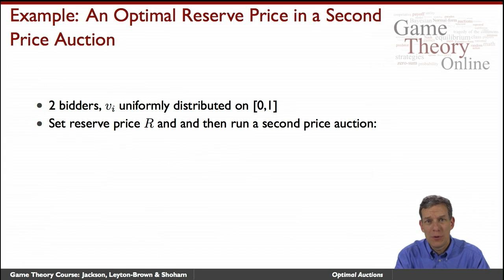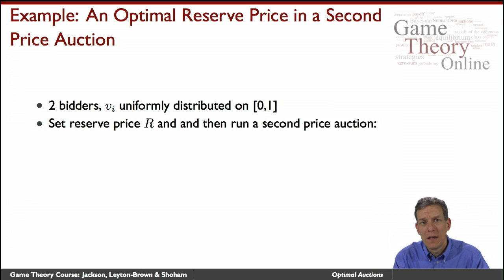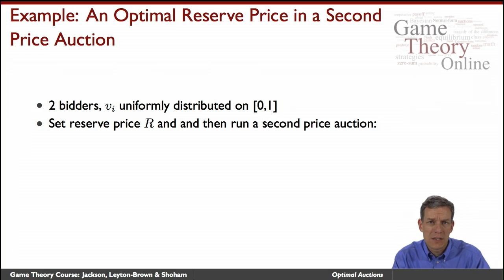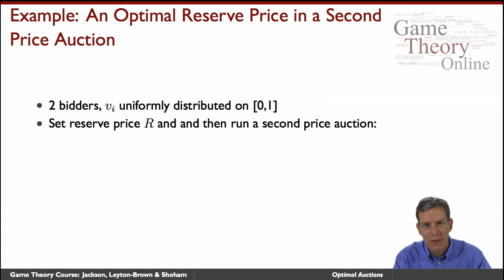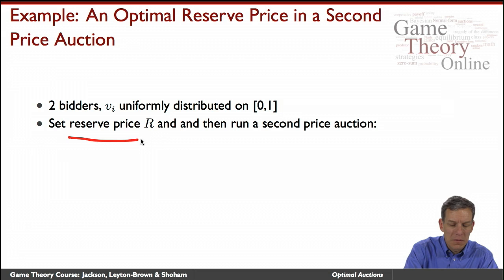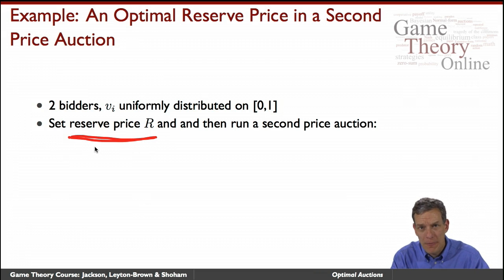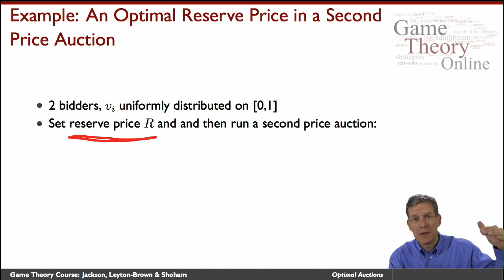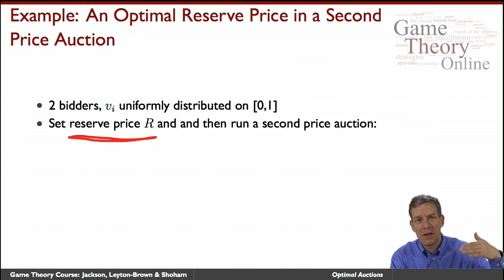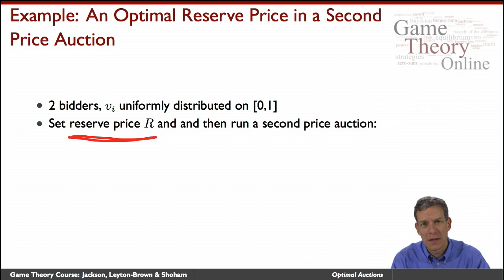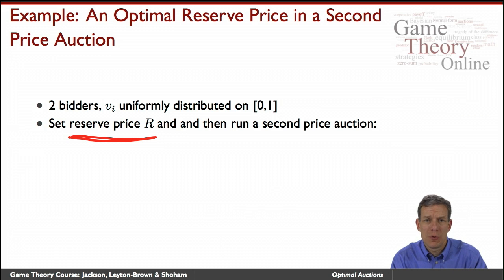Let's start with a simple example to build intuitions, then we'll give a general theorem. We have two bidders, each with a value uniformly distributed on [0, 1]. We'll consider changing the auction by sticking in a reserve price — this is quite common. Often when people are selling things, there's a minimum bid: a reserve price below which you're not allowed to bid. We'll set a reserve price in a second price auction to keep dominant strategies, and figure out which reserve maximizes expected revenue.